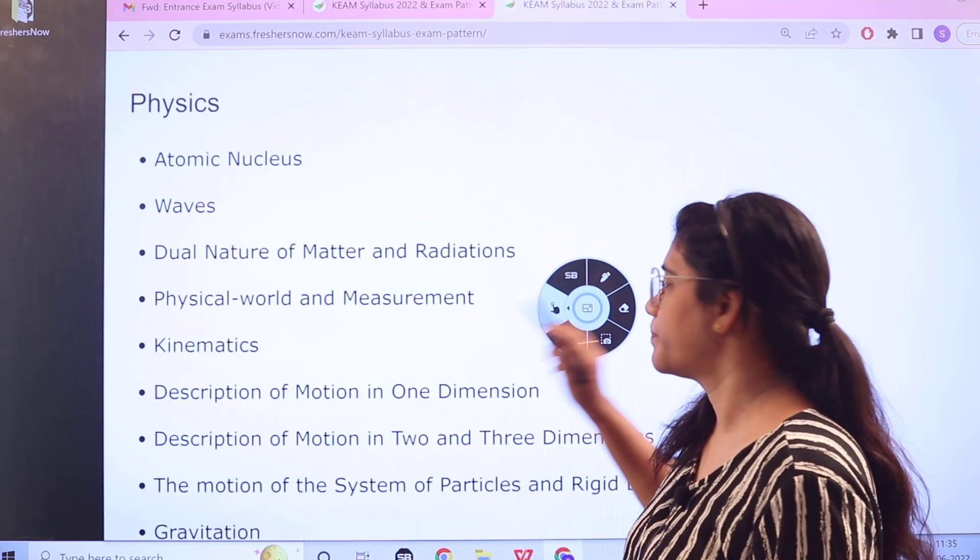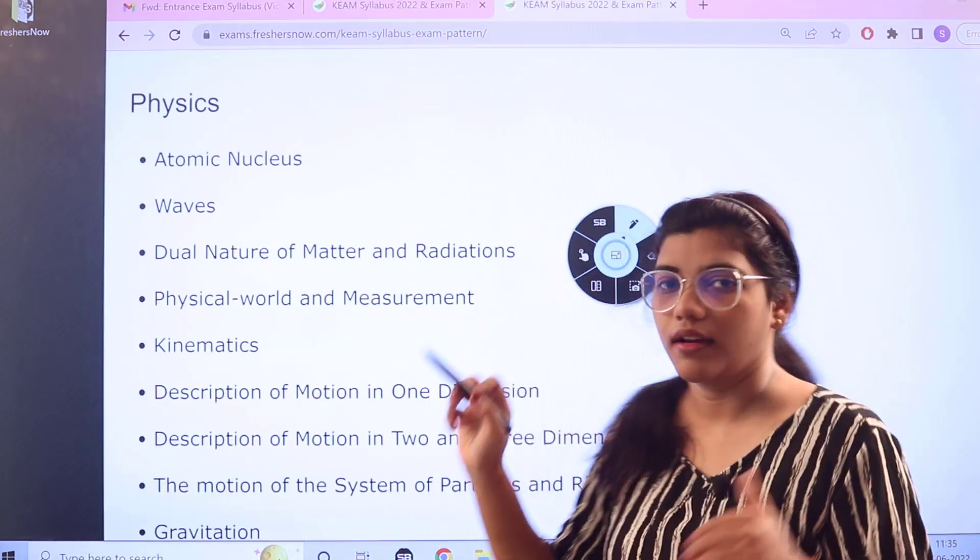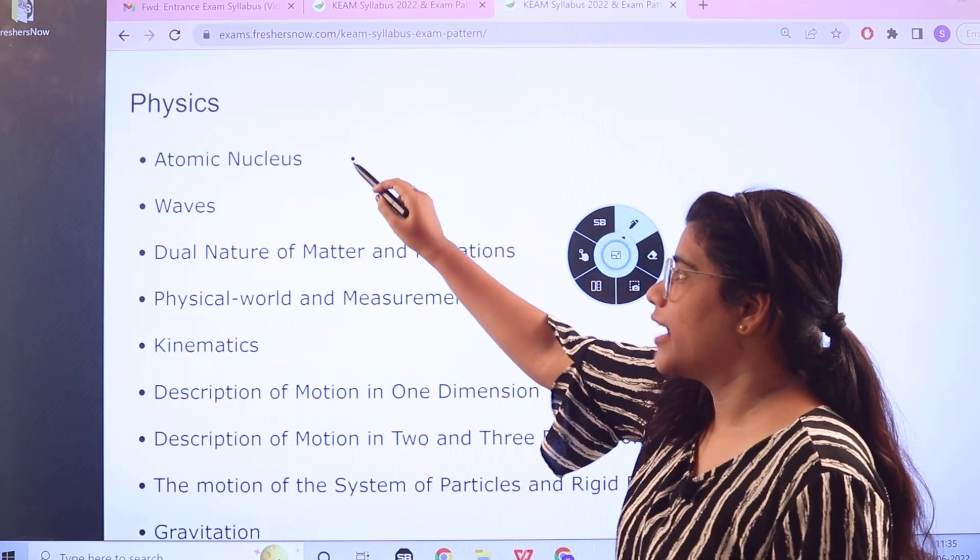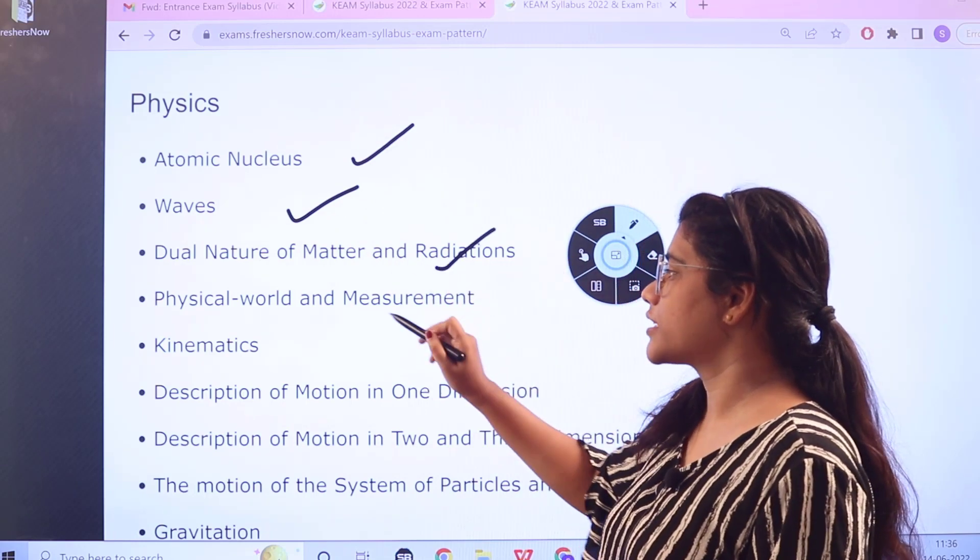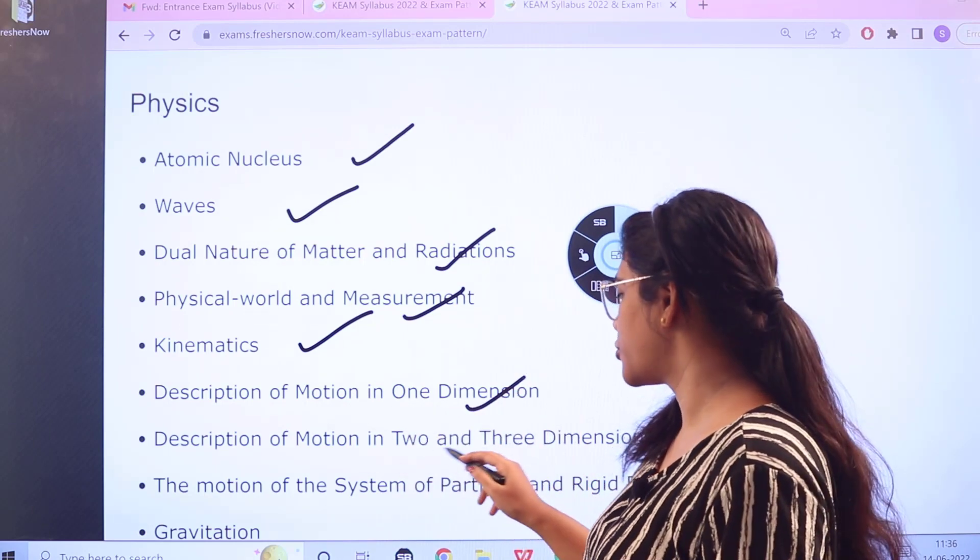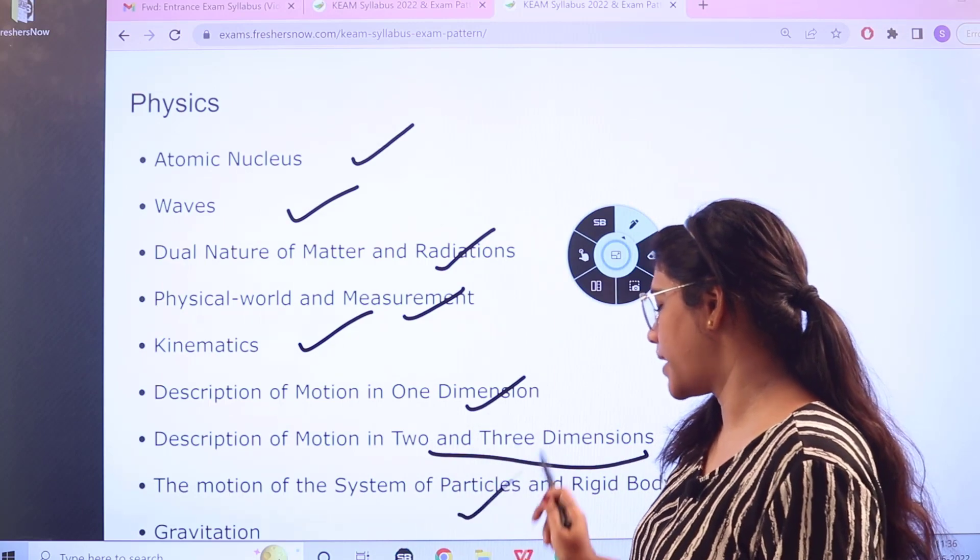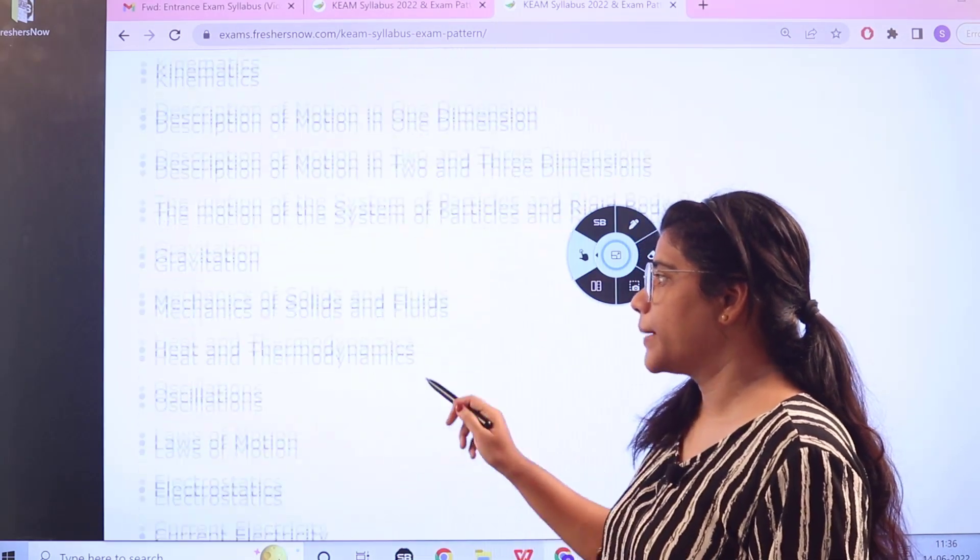Then for physics, everything is written topic-wise, so you can actually note them very easily: atomic nucleus, waves, dual nature of matter and radiation, physical world and measurement, kinematics, description of motion in one dimension, description of motion in two and three dimensions, then you have motion of systems and particles, then you have gravitation.